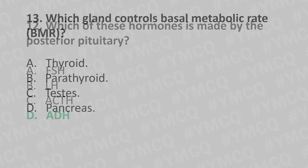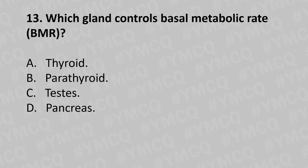Moving to our thirteenth question. Which gland controls the basal metabolic rate (BMR)? Option A: thyroid. Option B: parathyroid. Option C: testis. Option D: pancreas. And the answer is Option A: thyroid.